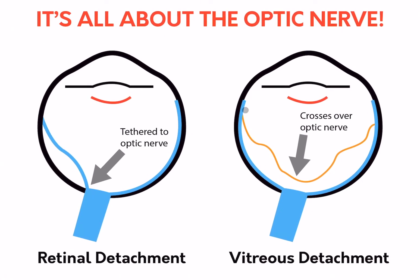Notice that you can distinguish retinal detachment from vitreous detachment by looking to see if it is tethered to the back of the eye. Since the retina is an extension of the optic nerve, when it comes off it will remain tethered to the retina and will not cross over.